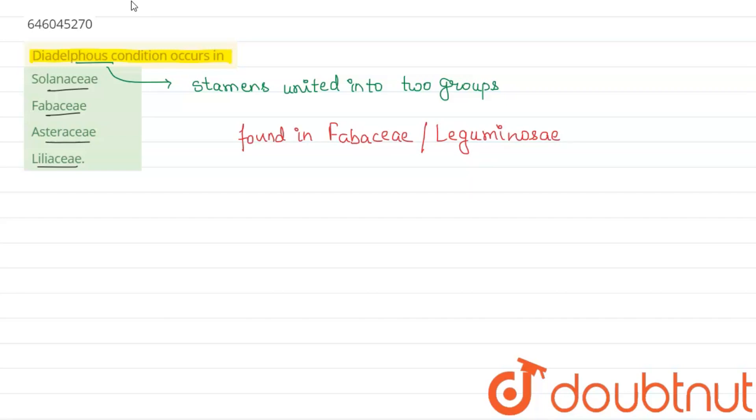So in Fabaceae, the stamens are total 10 in number. Total number of stamens is 10 and all of the stamens are arranged in two groups. And these two groups are in a 9 plus 1 arrangement.